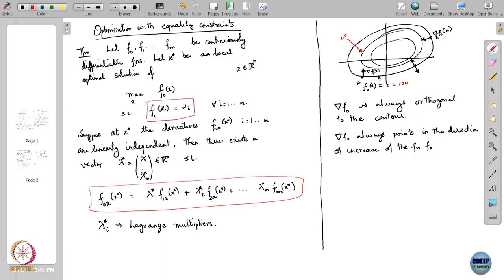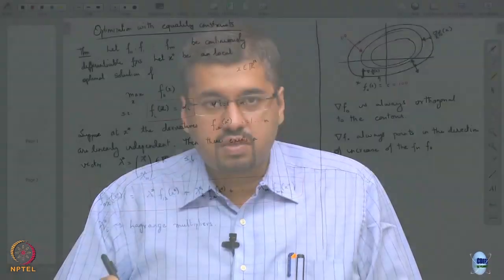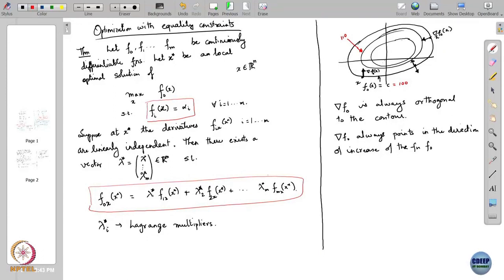Now let us go back to this boxed condition. What is this condition saying? It is saying that if you take the derivative of the function f₀, it is a linear combination of the derivatives of the constraints. That means the direction in which f₀ was increasing at x star — that direction is itself a linear combination of the directions of the gradients of the constraints.